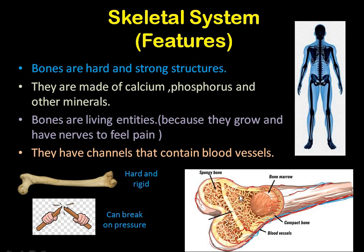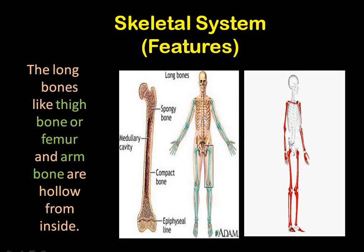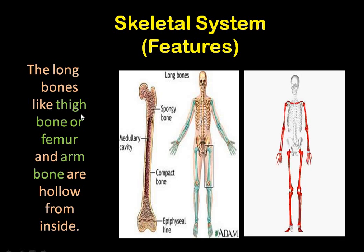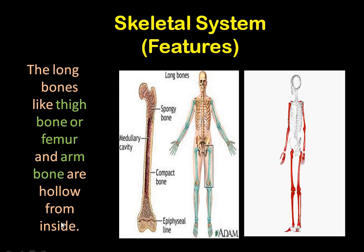These red lines are the blood vessels, while these are the nerves which are inside the bones, and they help us know the pain when a bone breaks. Otherwise bones are hard and rigid, but when pressure is applied — if you fall or there is an accident — these bones can break under pressure, and then we feel pain. These bones also have channels that contain blood vessels running along the bone. Long bones like the thigh bone (femur) and the arm bone are hollow from inside.